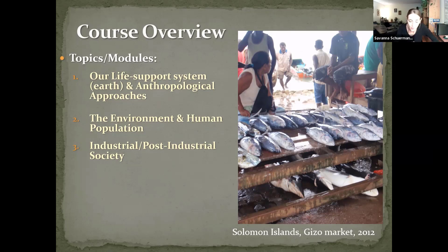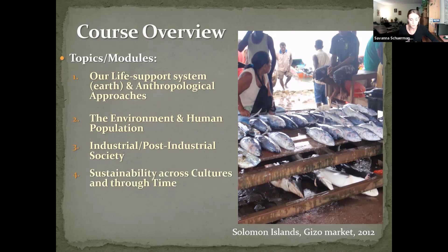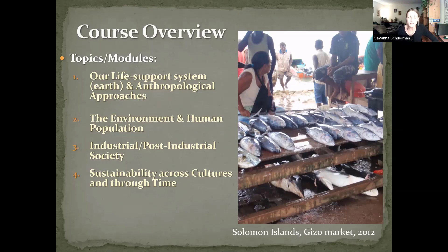After taking a critical look at our own society, we'll look at other societies from different places and time periods — sustainability cross-culturally. How have other cultures adapted to their environment, organized their societies, managed their resource base, and has it been sustainable or not? What can we learn from these other societies?